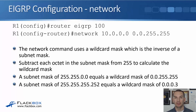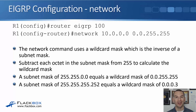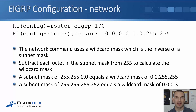After you have enabled EIGRP globally with 'router eigrp' and the AS number, the next command is the network command. This specifies which interfaces are going to participate in EIGRP. The network mask uses a wildcard mask, which is the inverse of a subnet mask. To figure out the wildcard mask, subtract each octet in the subnet mask from 255.